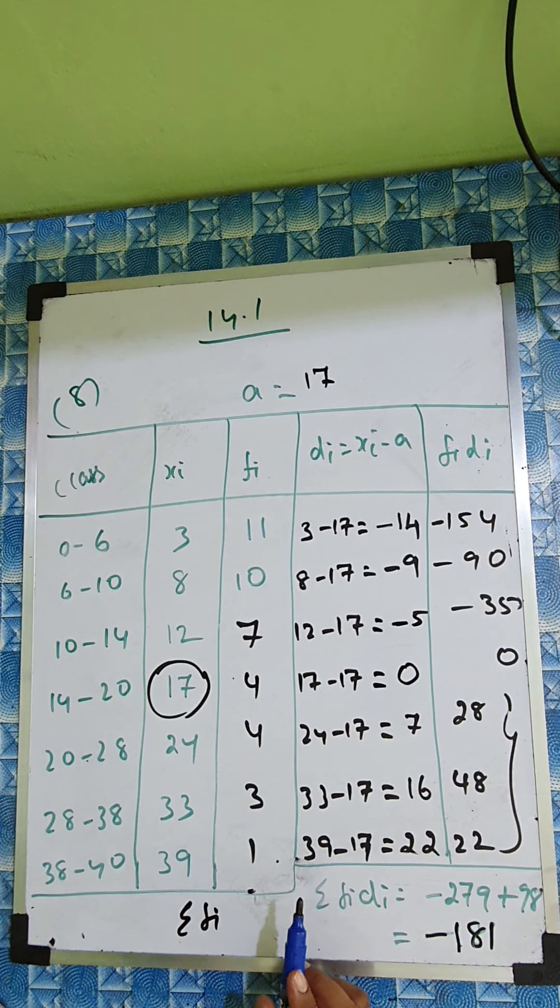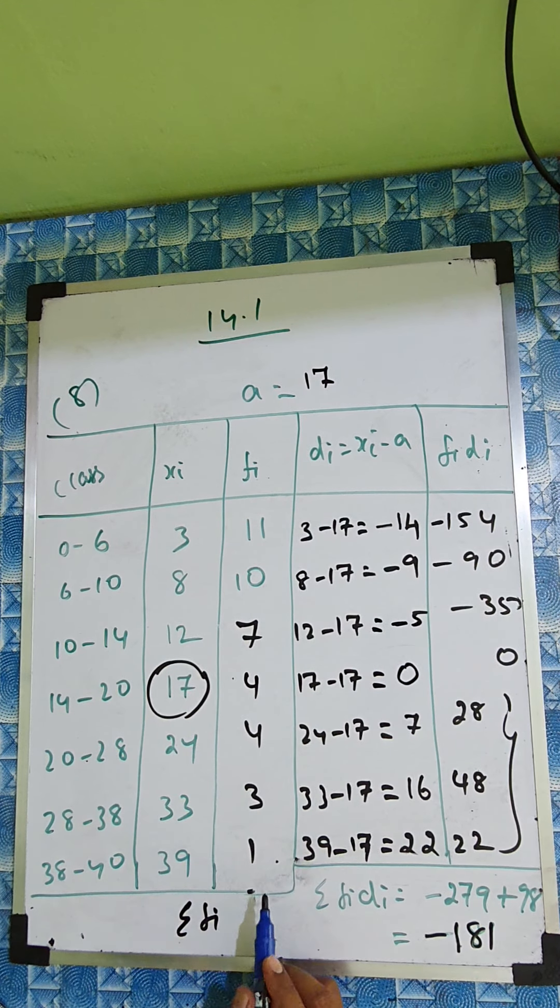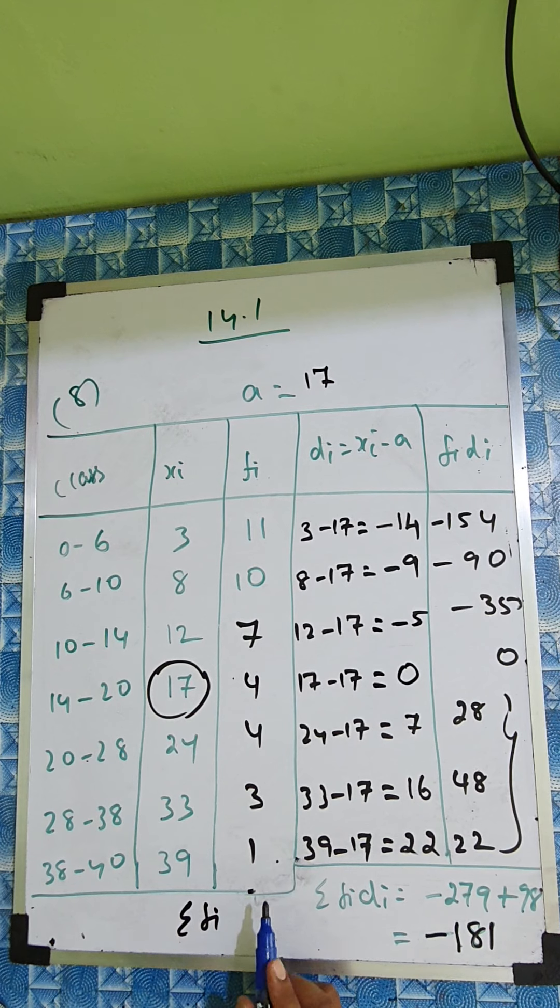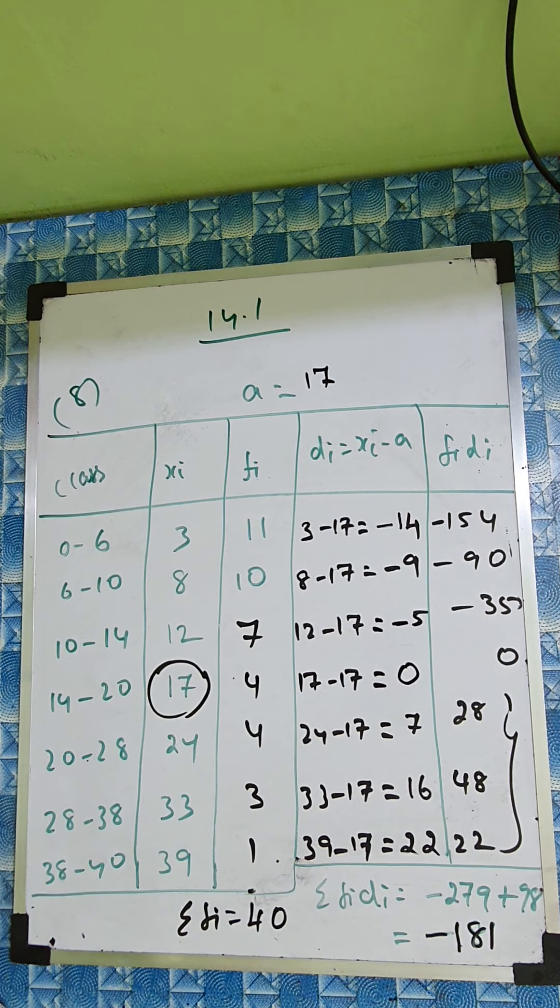And this total: 11 plus 10 plus 7 plus 4 plus 4 plus 3 plus 1. And this total is already given in the question, 40 students. So we just write straightly 40 students.